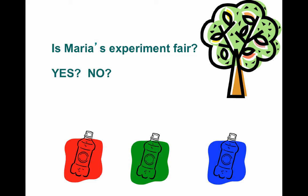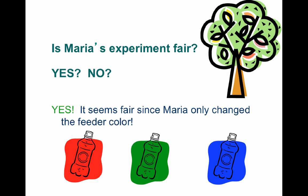Is Maria's experiment fair? Maria wants to know if birds prefer one color feeder to another. She makes three feeders from two-liter bottles, paints one red, blue, and green, fills each with the same amount of mixed bird seed, and plans to keep them out for ten days before measuring how much seed is eaten. She places all feeders in the school courtyard in a small tree, hanging each at the same height. Yes, Maria's experiment is fair because she only changed the feeder color — the feeders were all in the same area, at the same height, for the same amount of time, with the same seed.